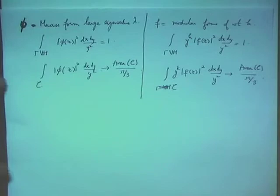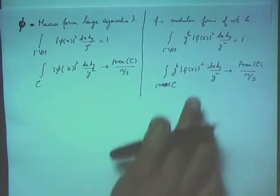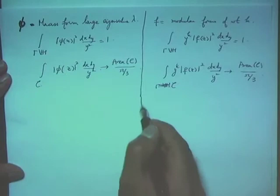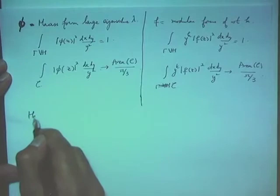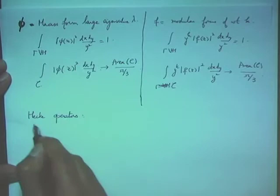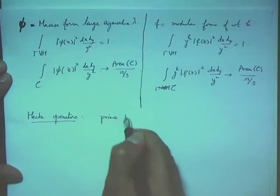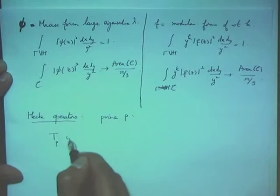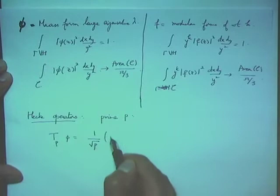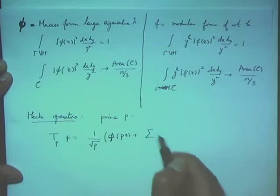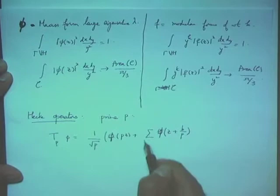The case of Maass forms is what Manfred will be talking about, and I'll be talking entirely about the case of holomorphic forms. In both cases, we'll see there's an important role to be played by Hecke operators, which is kind of where I stopped last time. The Hecke operators are particularly nice to define in the Maass form case, so let me just tell you what those are — say for a prime P.